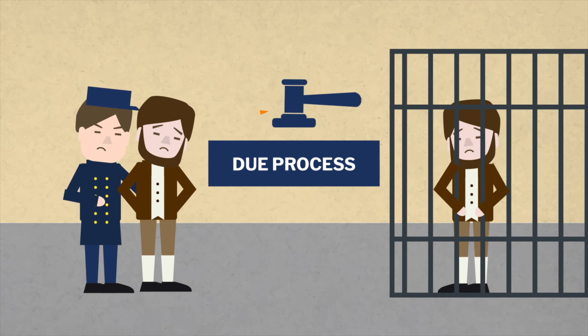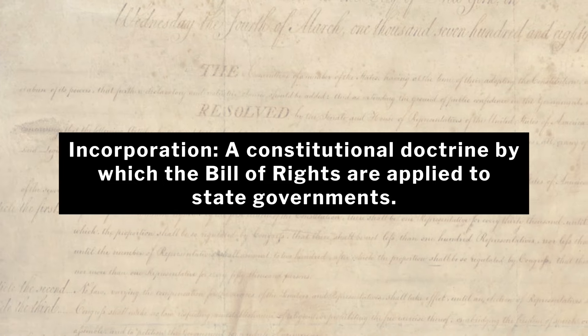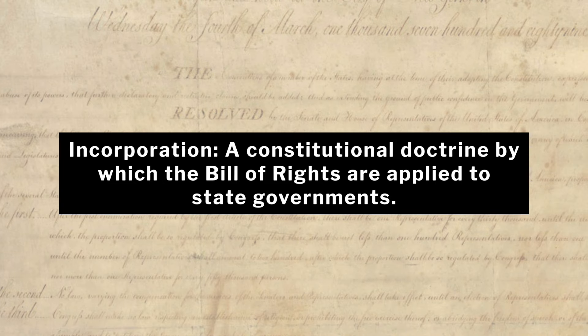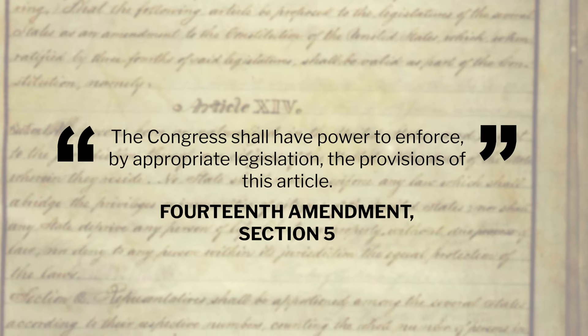During the first Congress of 1789, Representative James Madison was the driving force behind the Bill of Rights. Madison believed that the new Constitution had carefully limited powers and was not the main threat to individual rights and liberties. He was particularly concerned that the state governments would violate rights and be tyrannical. Therefore, he wanted to curtail the states with a Bill of Rights.